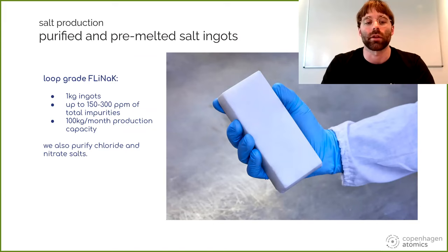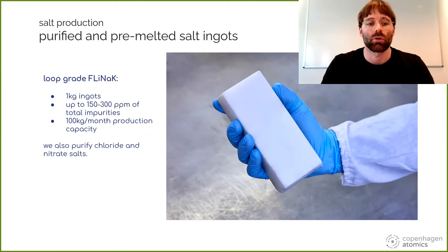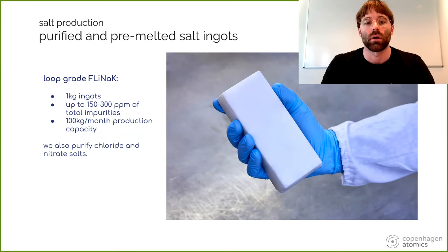We mainly use FLiNaK, and we have different grades. Our most-used grade is what we call loop grade. You can get an arbitrary amount of purity but you have to ask at what cost and for what test. If you're running a loop for a couple of months, something like 100 ppm is more than fine for most test purposes. We try to keep loop grade below 100 ppm, and we're rounding around 100 kilos per month of FLiNaK production this summer, with plans to scale by an order of magnitude within the next year.